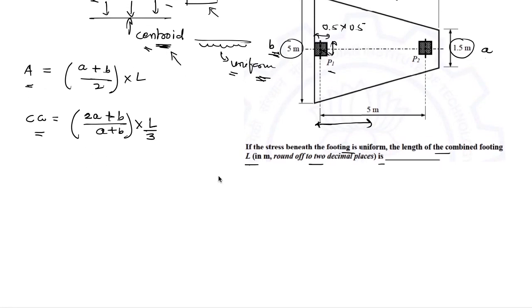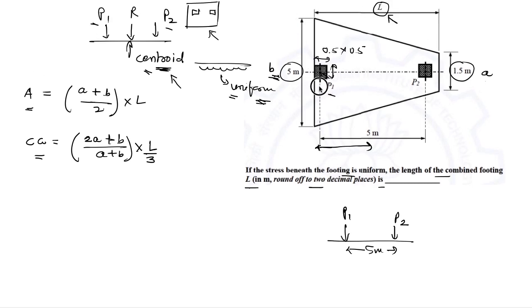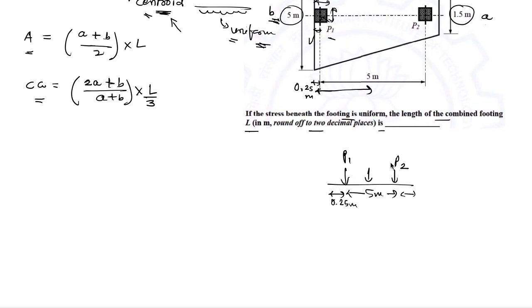First, let's find the centroid location for forces P1 and P2. The distance between the two column centers is 5 meters. Column P1 is right at the edge of the trapezoid; since the column size is 0.5 m, half of that — 0.25 m — is the distance from the footing edge to the center of P1. The resultant force equals P1 + P2, but we need to find its location.